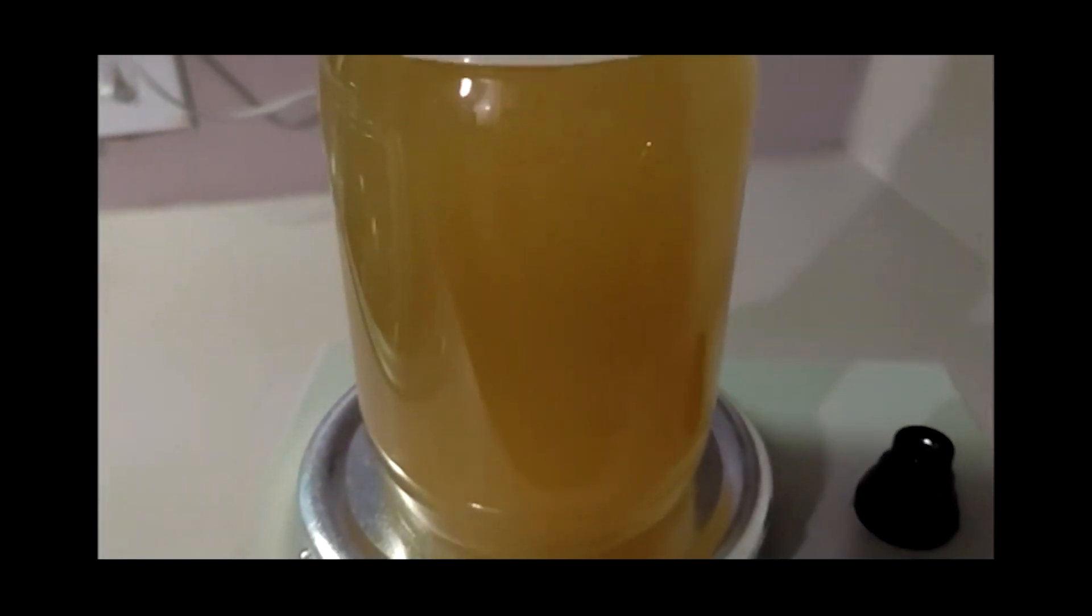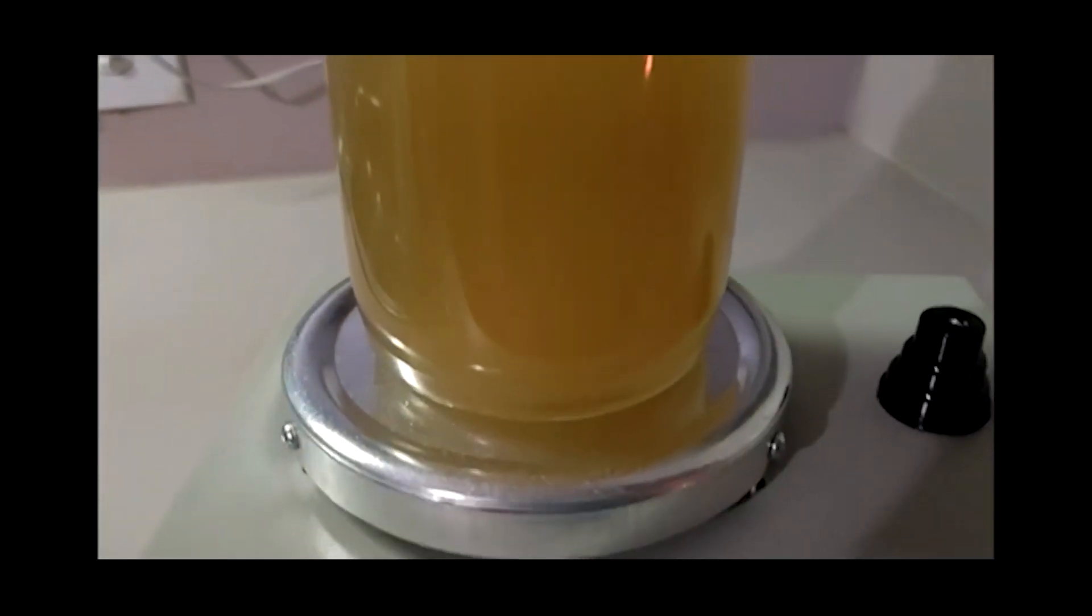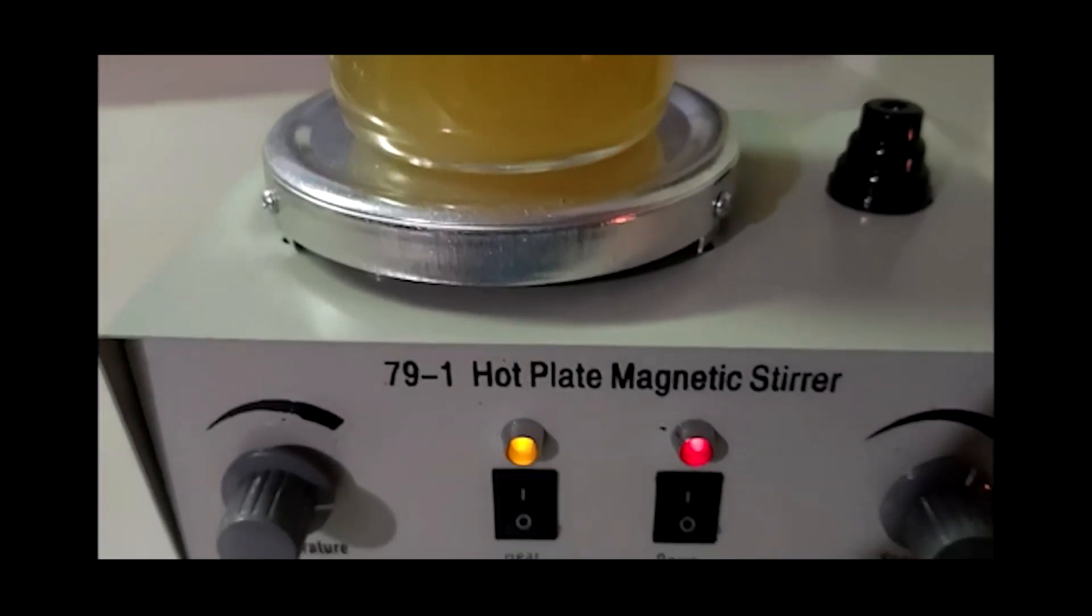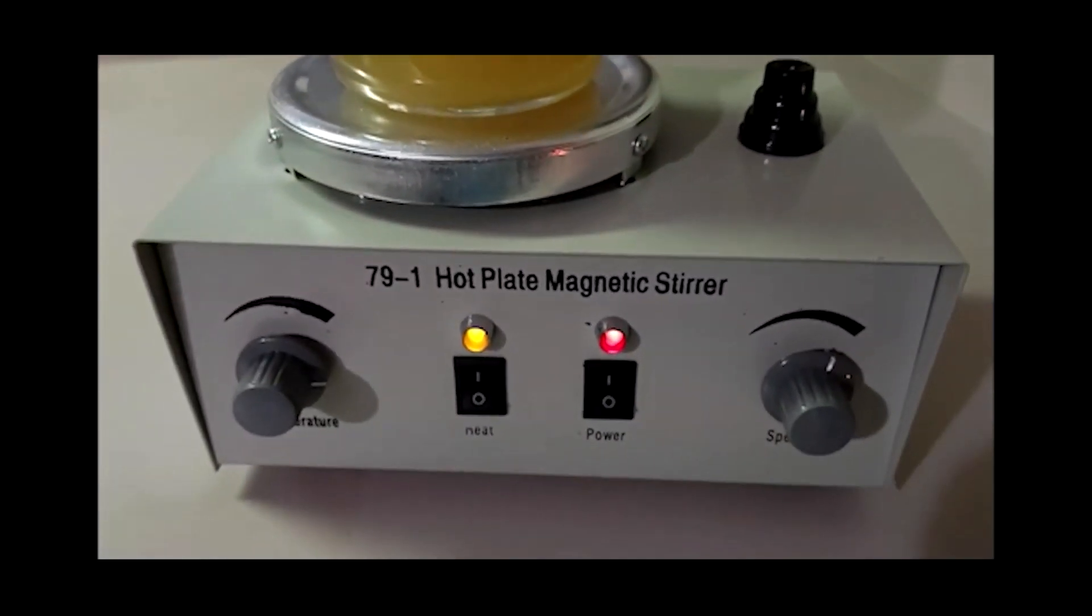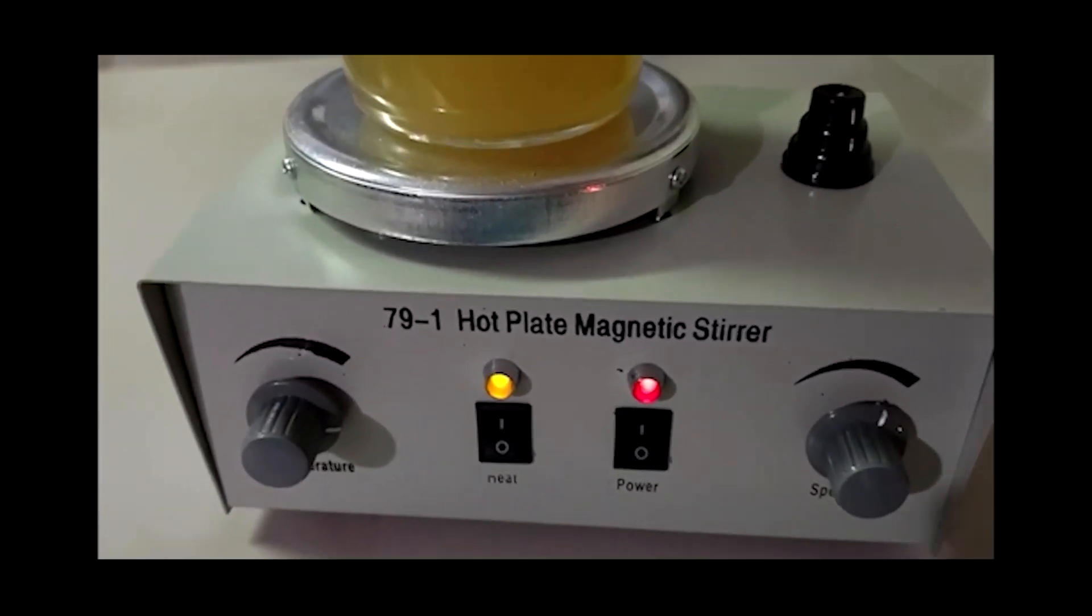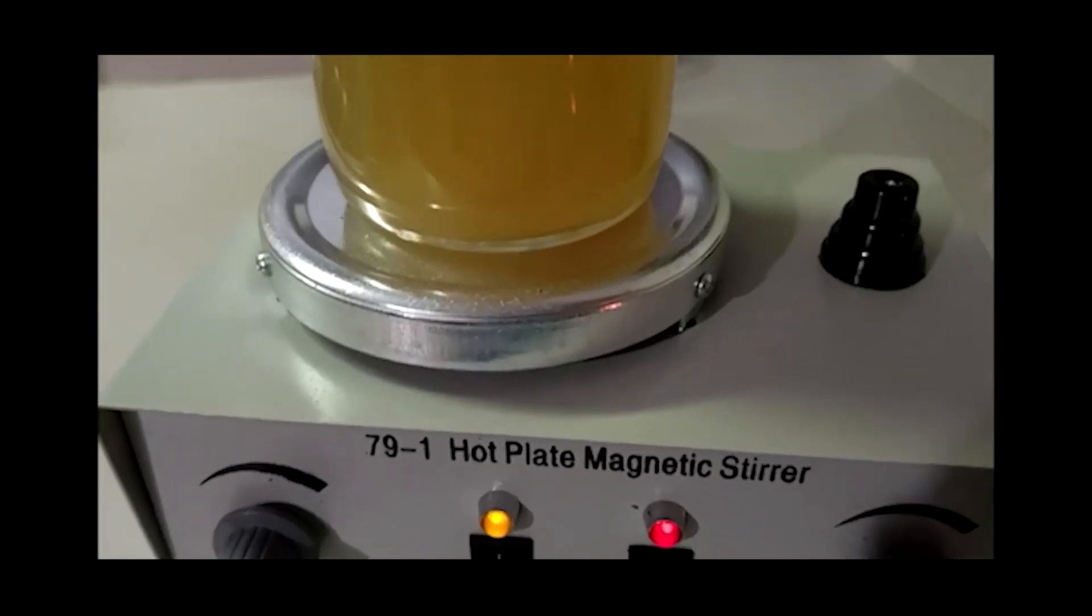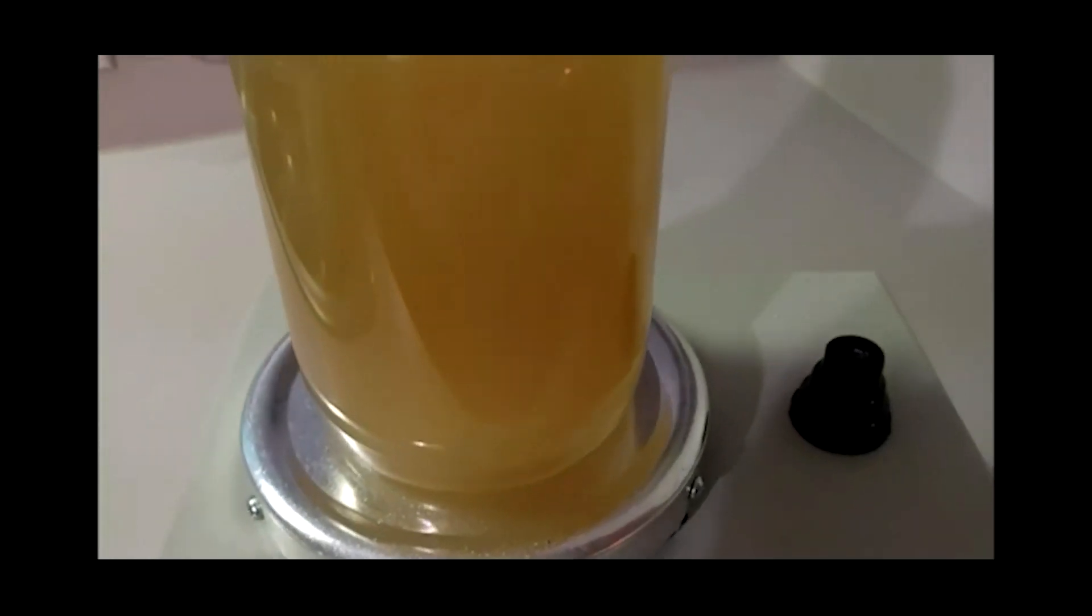We started with the standard 10 grams agar, 10 grams malt extract per 500 milliliters of purified water and definitely got quick tomentose growth, but it was hard to determine what was good mycelium and what was possible contamination.